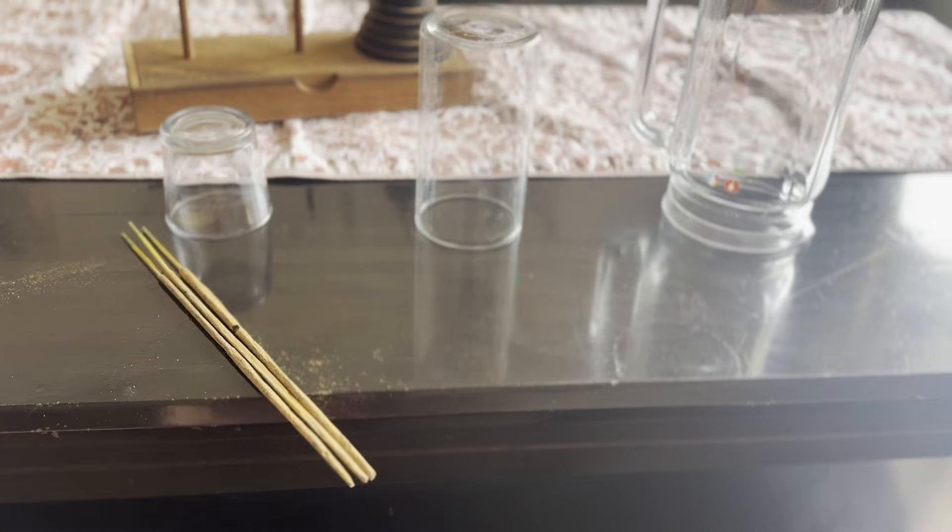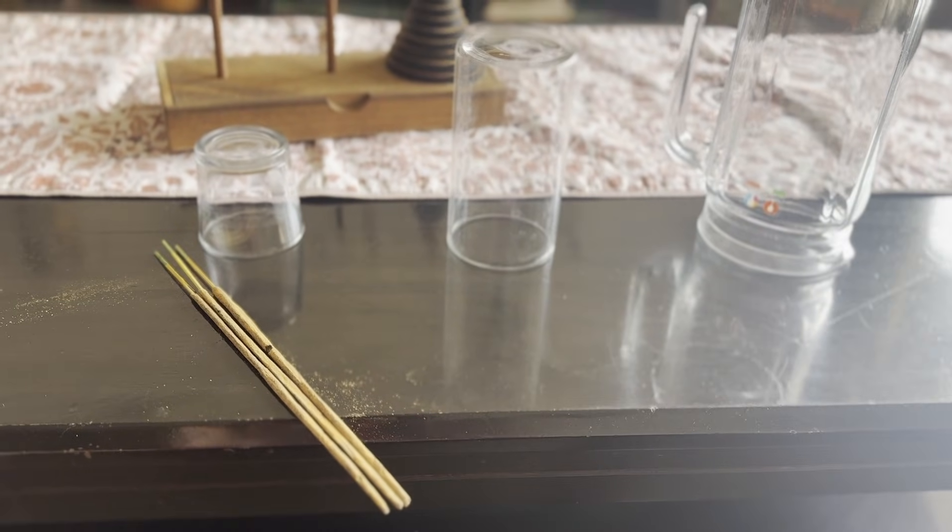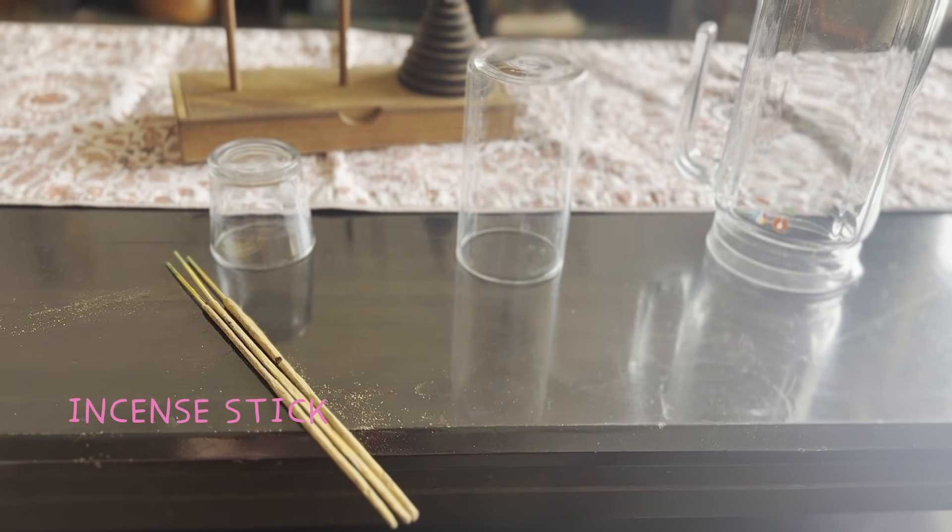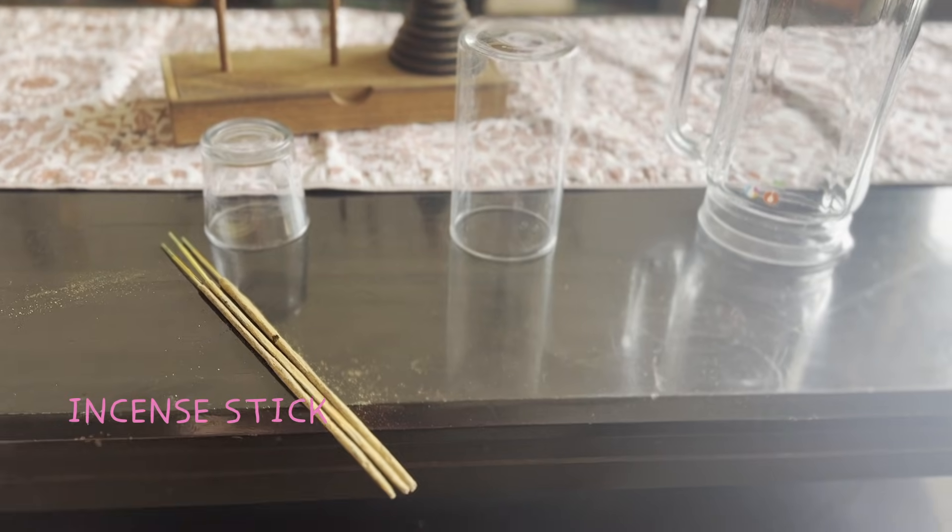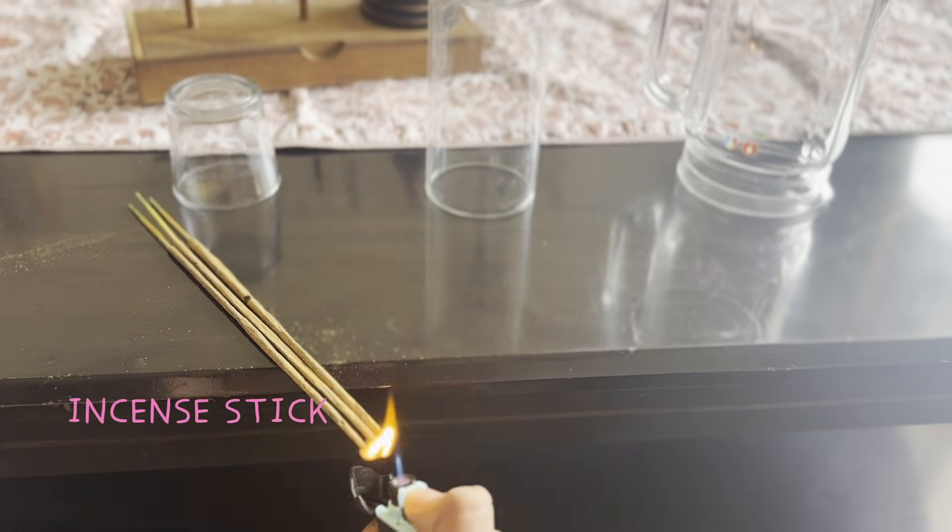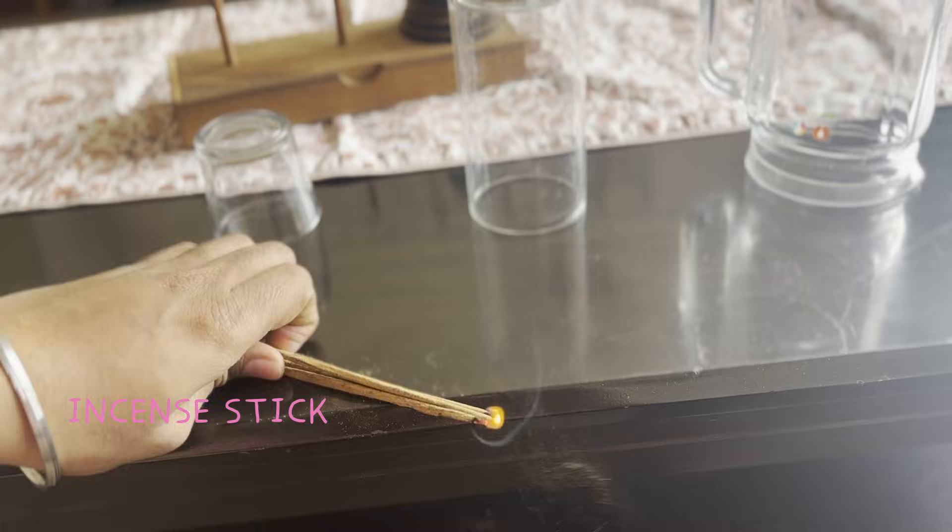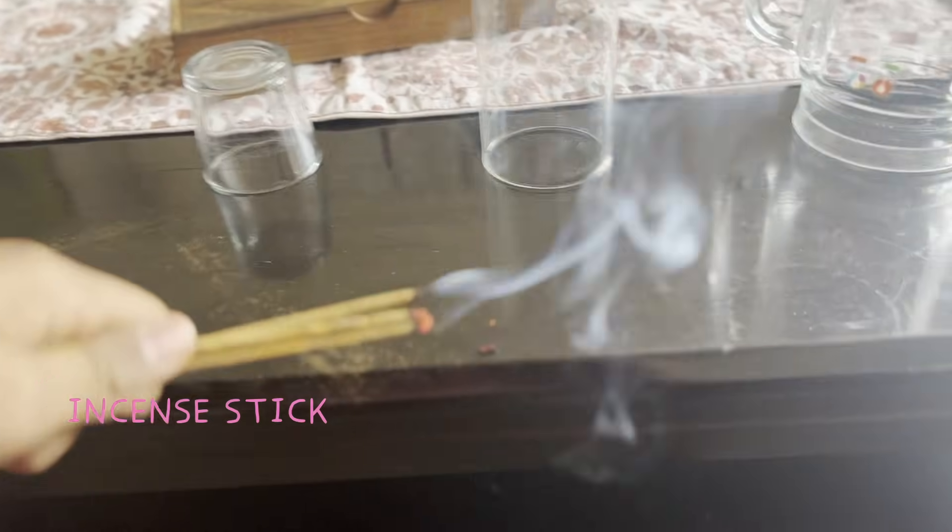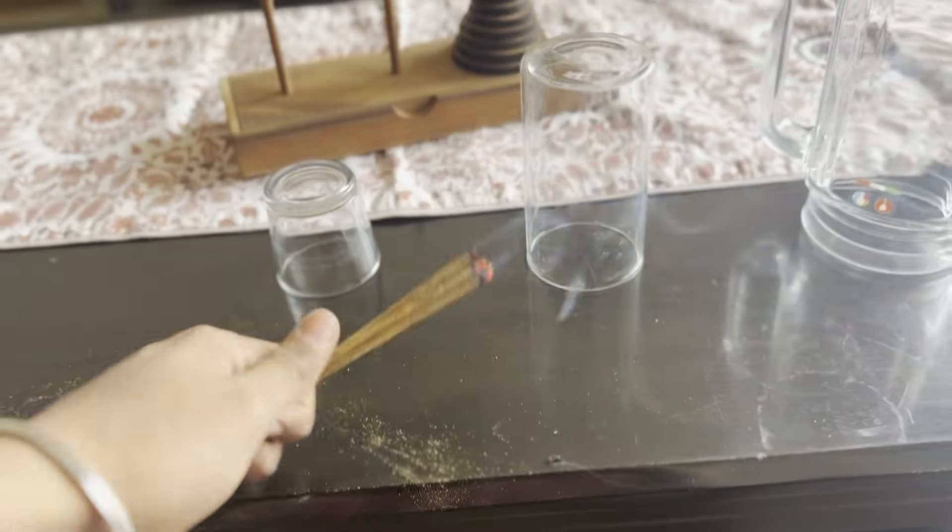Alright, let's do a simple experiment to understand the properties of gases. I've got three incense sticks here so we can generate enough visible smoke. Let me light it up. Here we go. You can see the smoke coming out. It's white, grayish color. Now I'm just going to let it be for a moment.